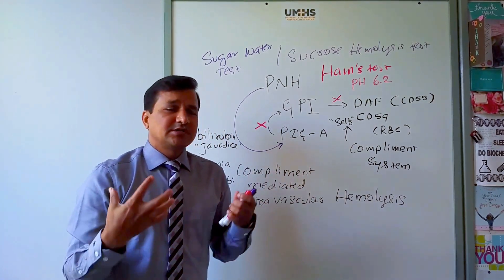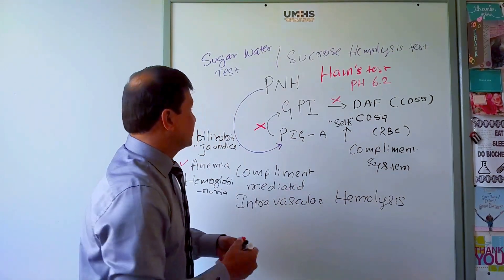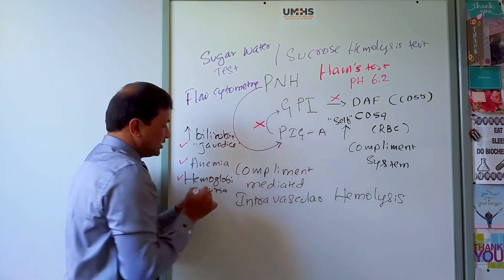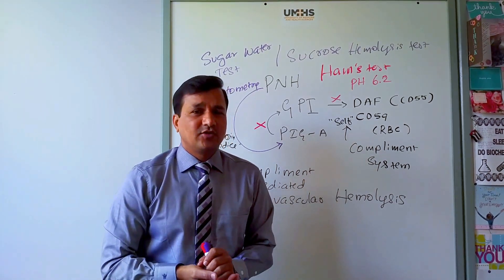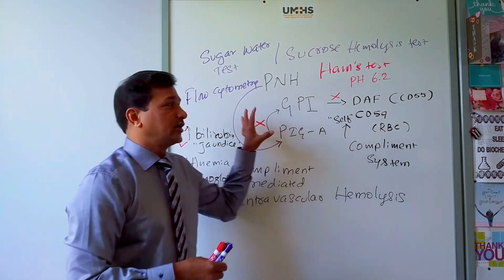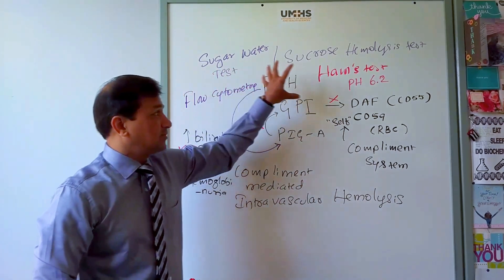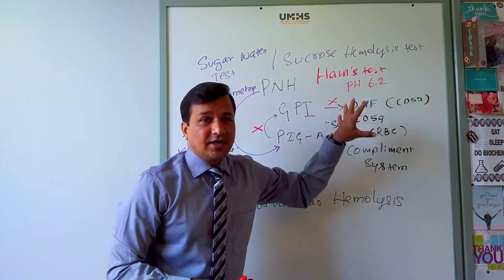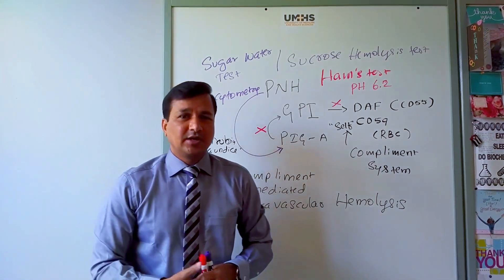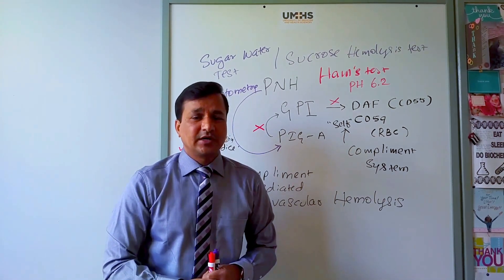A more sensitive and specific test is flow cytometry, where monoclonal antibodies are used to count the number of CD59 and DAF molecules on red blood cells. Flow cytometry is now replacing Ham's test as the definitive diagnostic test for Paroxysmal Nocturnal Hemoglobinuria.